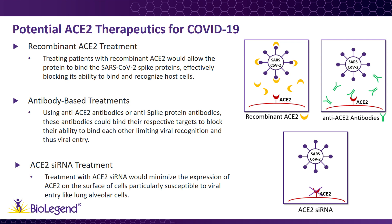A final method being suggested is the use of ACE2-siRNA to reduce the presence of ACE2 on the cells most at risk for exposure to the virus. By eliminating the surface receptor for the virus, there would be no way for the virus to recognize the host cell and invade.